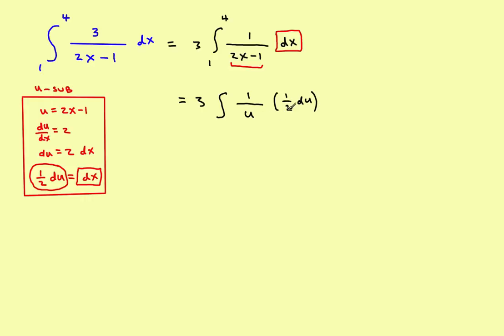Okay, now the next thing, you've got a constant 1 half here, so you can bring the 1 half outside the integral, and that will get you to this. This will become the integral of, this will now become 3 halves, the integral of 1 over u du.